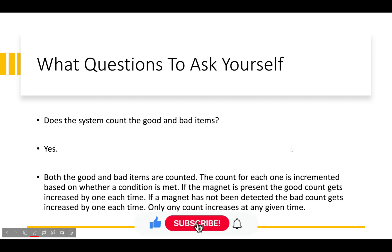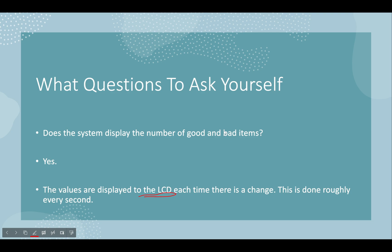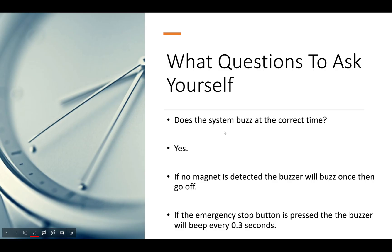If good items are being detected, the good count increases and the bad count stays fixed, and vice versa. Does the system display the number of good and bad items? Yes — for my system, the values are displayed to the LCD each time there is a change, roughly every second, and also to the shell. Does the system buzz at the correct time? Yes — if no magnet is detected the buzzer buzzes once then goes off, roughly every second. If the emergency stop button is pressed, the buzzer beeps every 0.3 seconds and the LEDs flash.